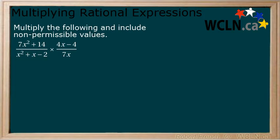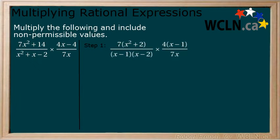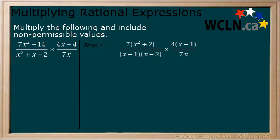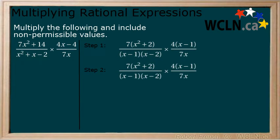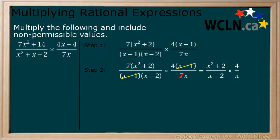Multiply the following rational expressions together. Include non-permissible values with your final answer. Step 1: Factor the numerator and denominator in each expression. Step 2: Cancel common factors and write down non-permissible values from cancelled factors. We can cancel a 7 and an x minus 1. Here, we make a note that x cannot equal negative 1, as we will need to add this at the end.